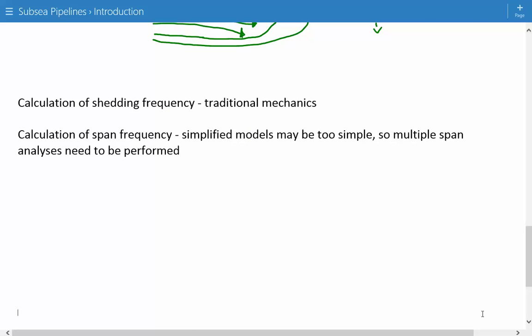So typically, the calculation of shedding frequency is done using traditional mechanics, but you have to also take into account the effect of the seabed and how close it is. And then the calculation of the span frequency has traditionally been done using simplified models, but recent theories have suggested that these simplified models may be too simple. So for that reason, multiple span analyses need to be performed.